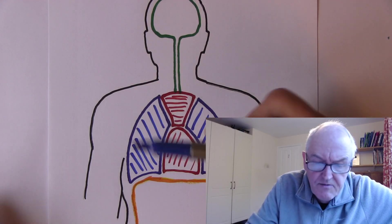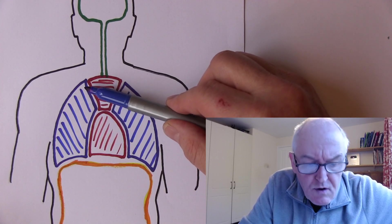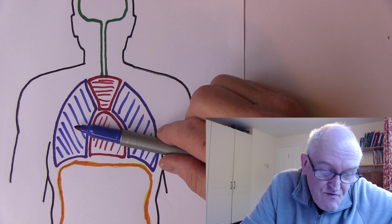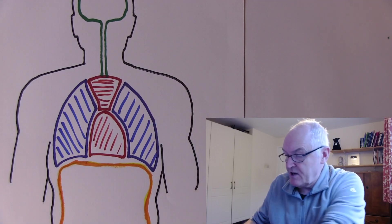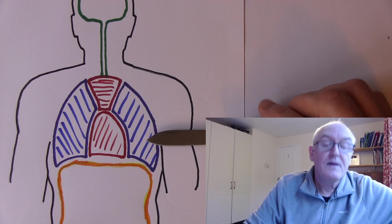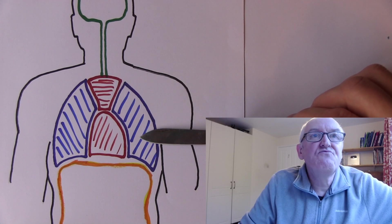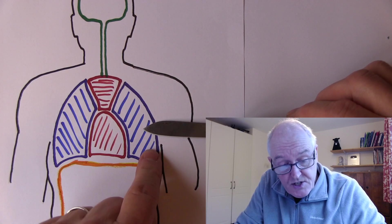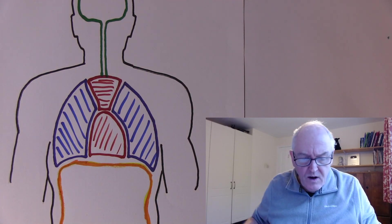In blue we have the pleural cavities — the lung fields — each surrounded by pleural membranes. Each lung is in its own individual cavity: the right pleural cavity and the left pleural cavity. This is critically important: if someone sustains a penetrating chest injury, air enters one cavity and that lung collapses. But because the other lung is in its own separate pleural cavity, only one lung collapses.